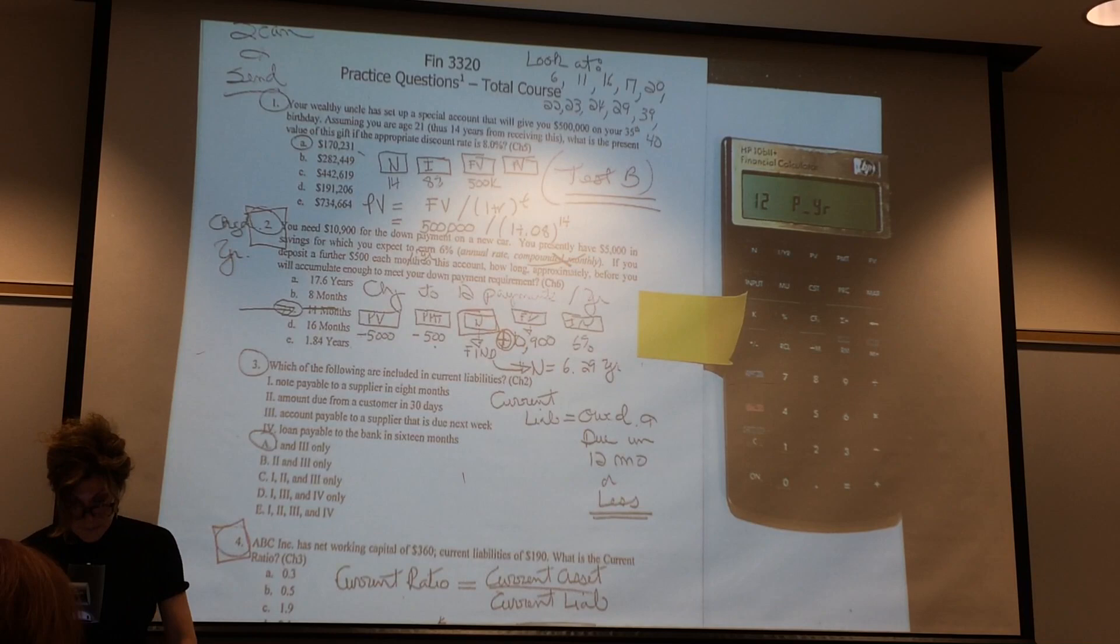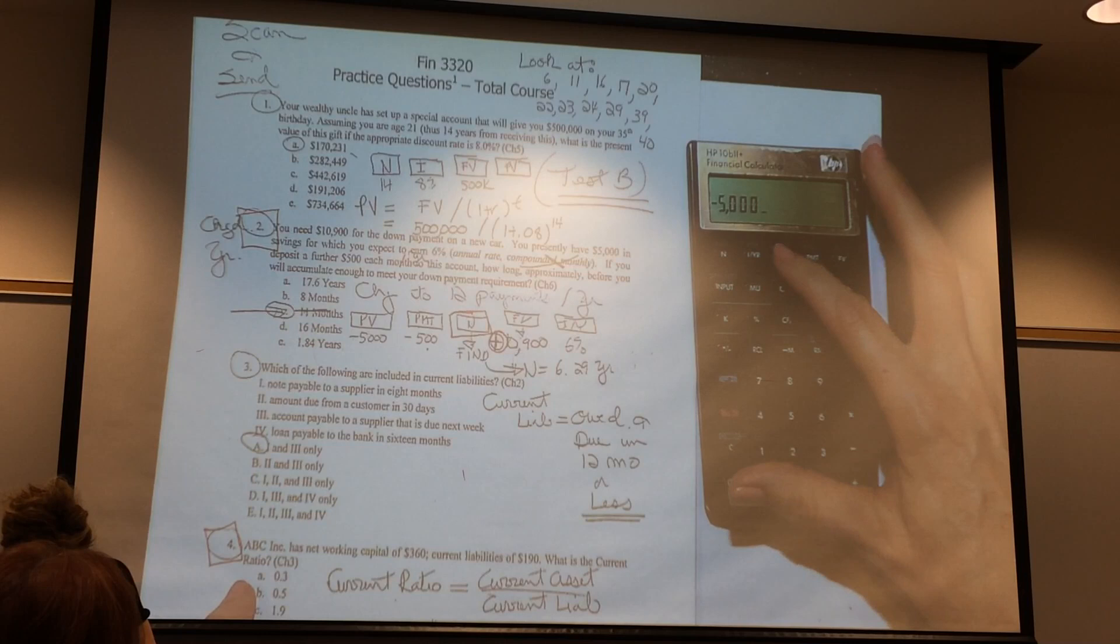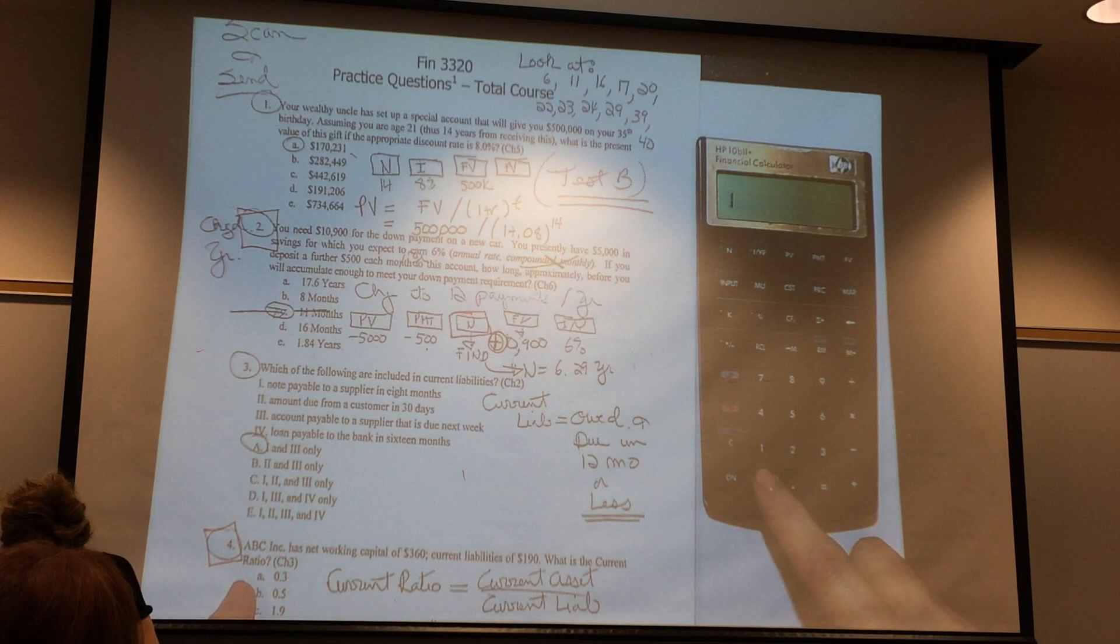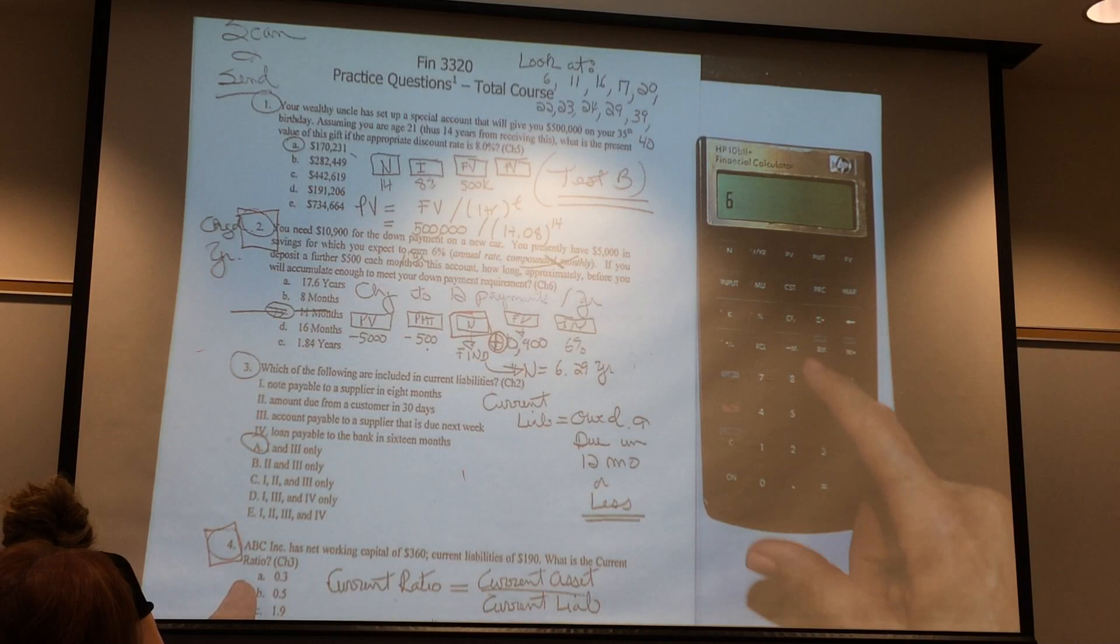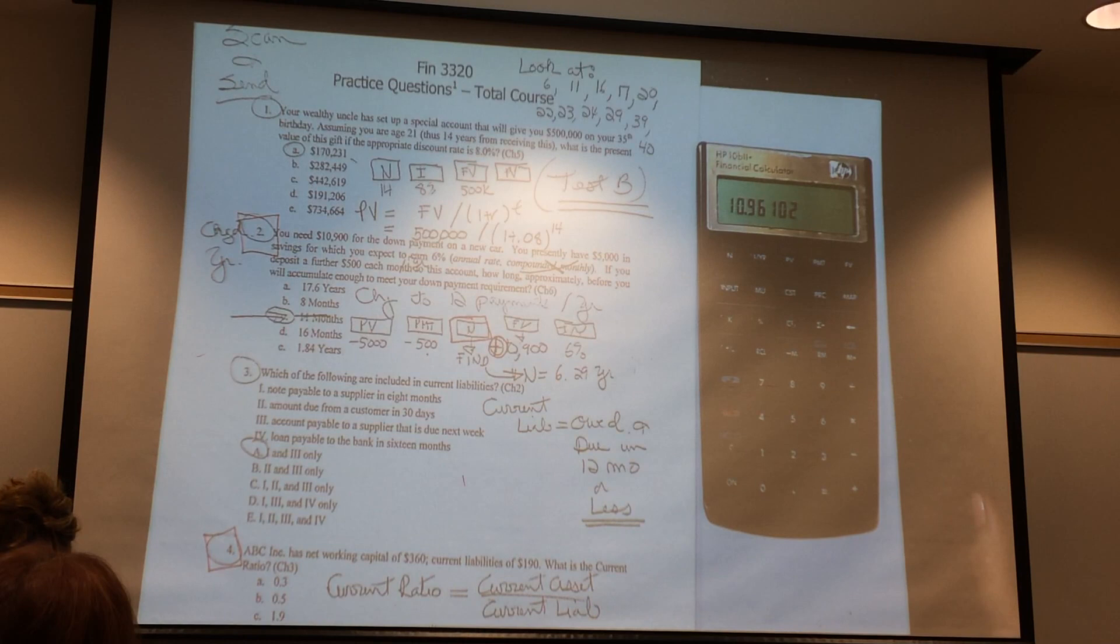So what am I going to do first? 12 payments a year. So if I do, can you see that? $5,000 negative, that's my present value. $500 negative, that's my payment. I need to have $10,900 in the future. My interest a year is 6%. How long is it going to take me? That's months, by the way. It's going to take me 11 months to earn my $10,900.